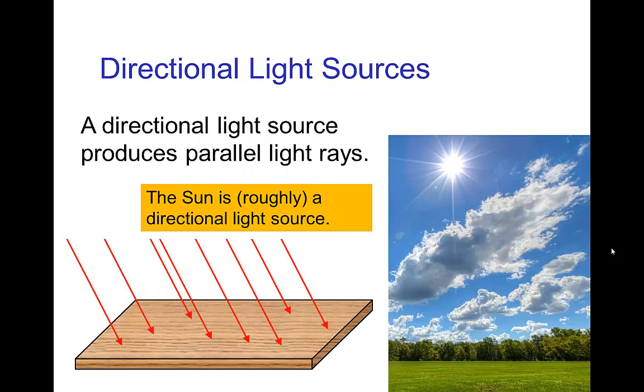Now, let's talk about one of the simplest types of light sources, which would be a directional light source. Now, with a directional light source, all of the light rays are parallel. So, they reach an object or surface, all traveling parallel to each other.